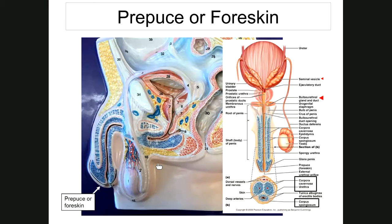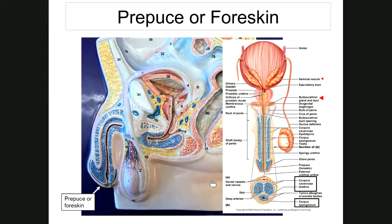The penis is the male copulatory organ, functioning in both urination and copulation. The primary sex organ is the testes, while the penis is the copulatory organ. The top two dorsolateral cylinders of the penis are the corpora cavernosa, each containing a deep artery through which blood fills the cylinders to achieve an erection.